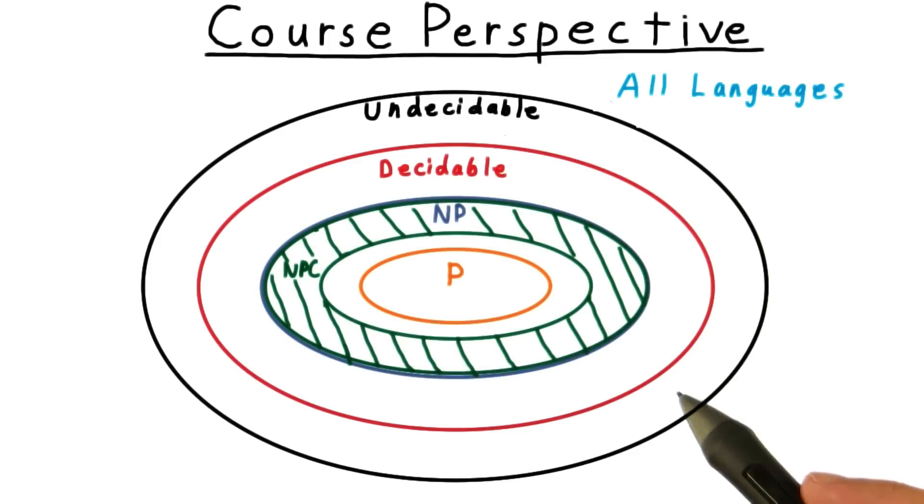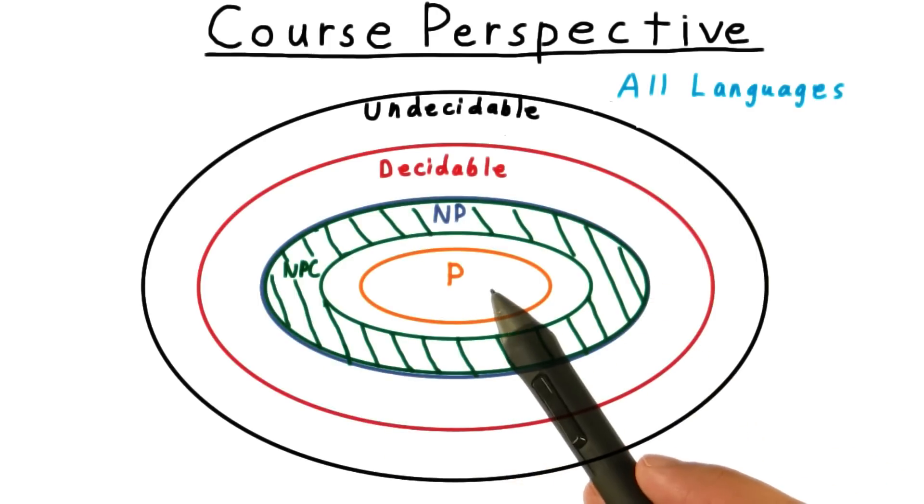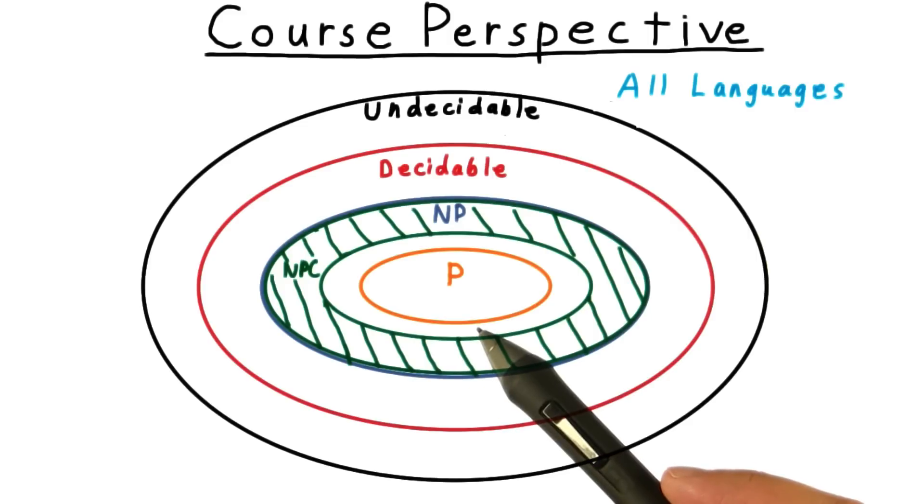In the section of the course on complexity, we considered several subclasses of the decidable languages. P, which consists of those languages decidable in polynomial time.